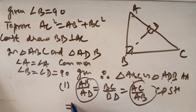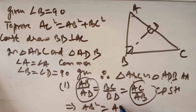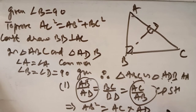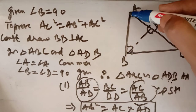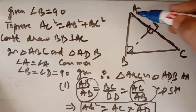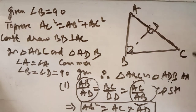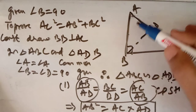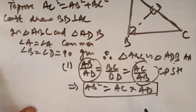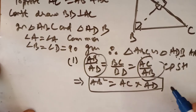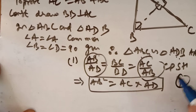AB/AD = AC/AB, so we can write AB² = AC · AD. This result is important — AB² = AC · AD — it could appear as a separate question. Let us call this Step 1.